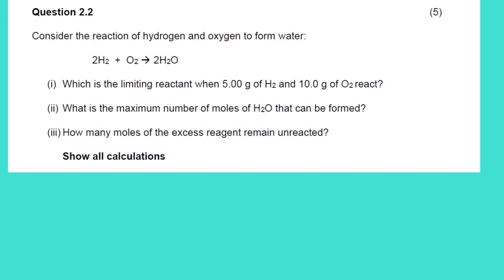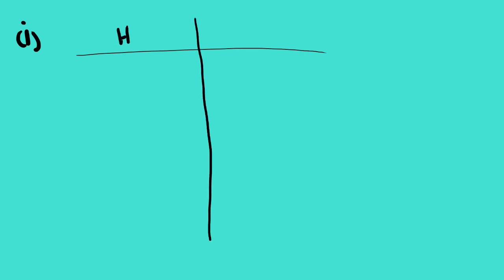Without wasting time, consider the reaction of hydrogen and oxygen to form water. Roman numeral (i): which is the limiting reactant when 5 grams of hydrogen and 10 grams of oxygen react? We need to find the limiting reagent. I normally advise my students to use a table to make things easy — put the first reactant here and the second reactant here.